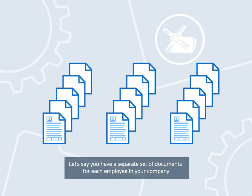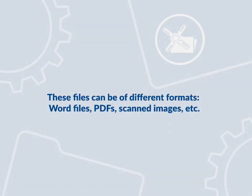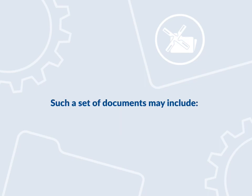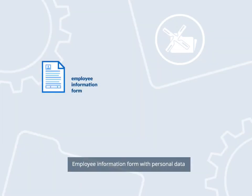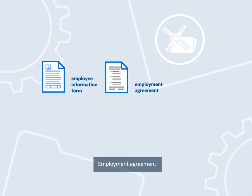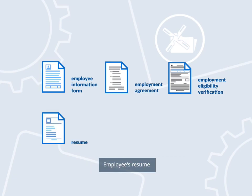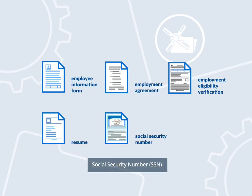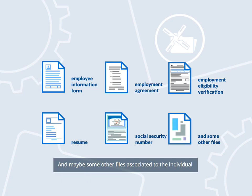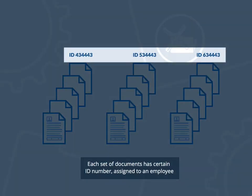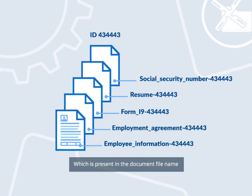Let's say you have a separate set of documents for each employee in your company. These files can be of different formats: Word files, PDFs, scanned images, etc. Such a set of documents may include an Employee Information Form with Personal Data, Employment Agreement, Employment Eligibility Verification Form I-9, Employee's Resume, Social Security Number, and maybe some other files associated to the individual. Each set of documents has a certain ID number assigned to an employee, which is present in the document file name.